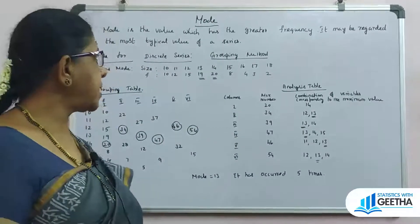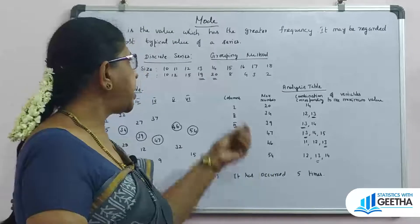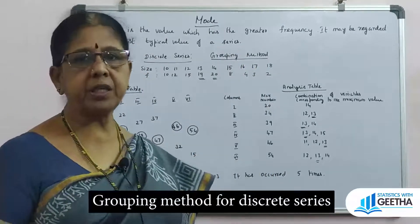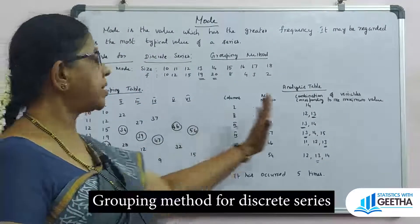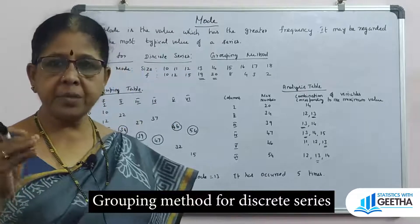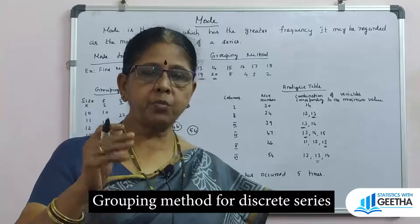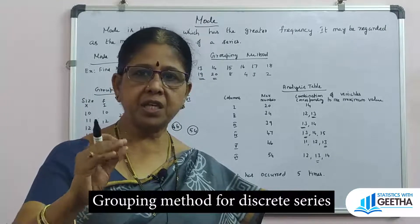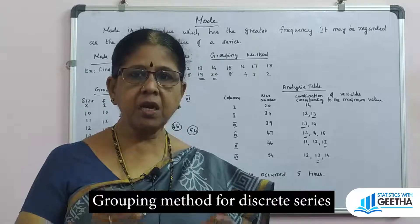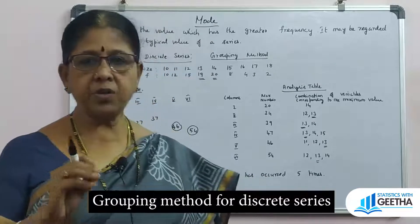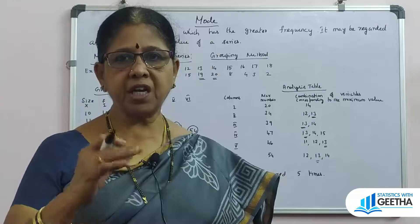Now, in discrete series, when the direct method is not clear, we go to the grouping method. The grouping method uses two tables: a grouping table and an analysis table. We use this method when the maximum frequency is very close to neighboring frequencies — for example, if the maximum frequency is 20 and the next is 19, there is confusion in identifying the mode.